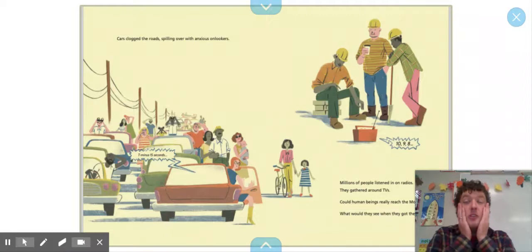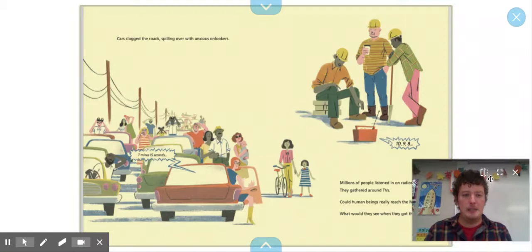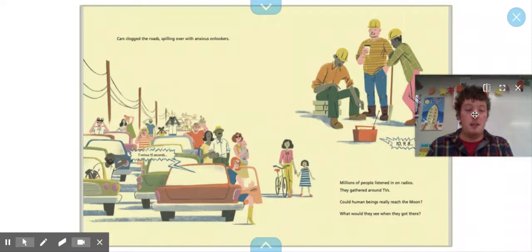Cars clogged the roads, spilling over with anxious onlookers. Millions of people listened on radios. They gathered around TVs. Oops, I can't see. There we go. Could human beings really reach the moon? What would they see when they got there?